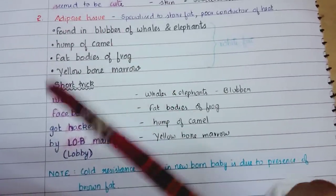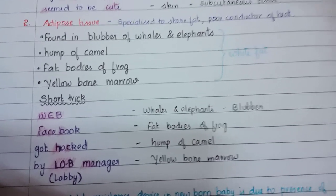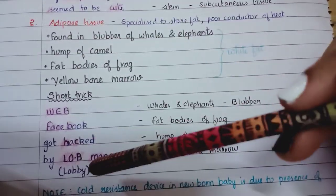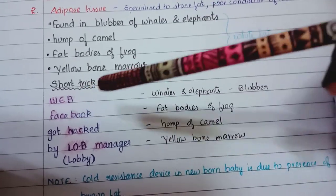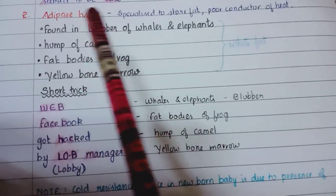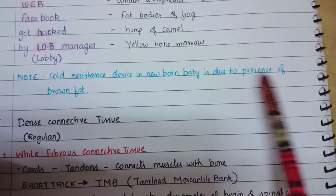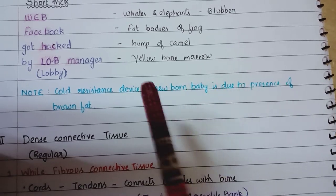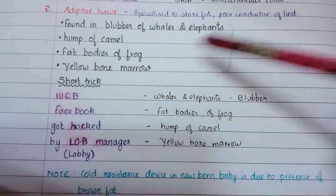The short tricks are mainly for when you forget - you can use them at that time. Don't get fully dependent on short tricks; you must know the content also. But short tricks will help you remember where each tissue is found more easily. Note: core resistance in newborn babies is due to presence of brown fat. The other four locations listed are white fat.